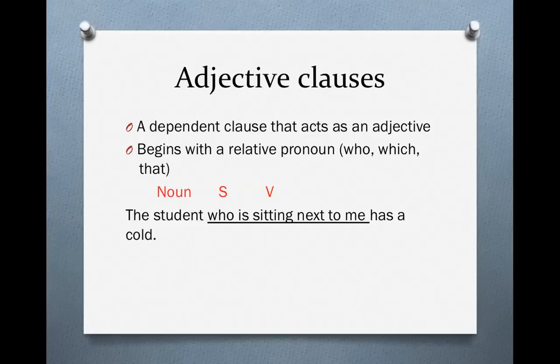For example: 'The student who is sitting next to me has a cold.' We have an independent clause in this sentence: 'The student has a cold.' Subject: student. Verb: has. But we also have an adjective clause. Notice the adjective clause as it's underlined: 'who is sitting next to me.' The subject of the adjective clause is who. The verb is 'is sitting.' And all of those words together describe student — it's the student who is sitting next to me. That is an example of an adjective clause.